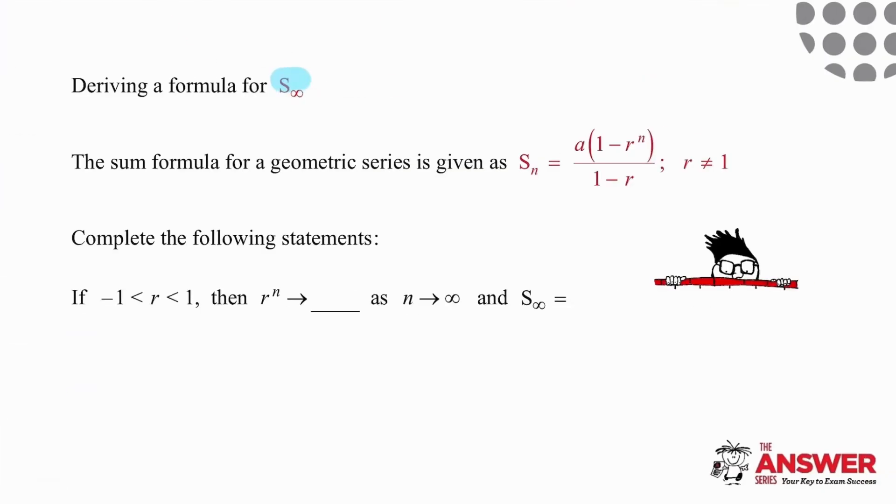Now we're going to derive an actual formula for the sum to infinity, remembering that the sum to infinity can only be determined if your ratio lies between negative one and one. Now what you need to do is complete the statement, work out what happens to the result if the ratio is raised to the power of n and that question is being worked out not for n as any number but as n tending to infinity.